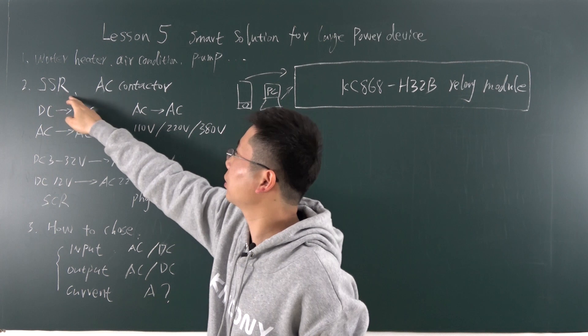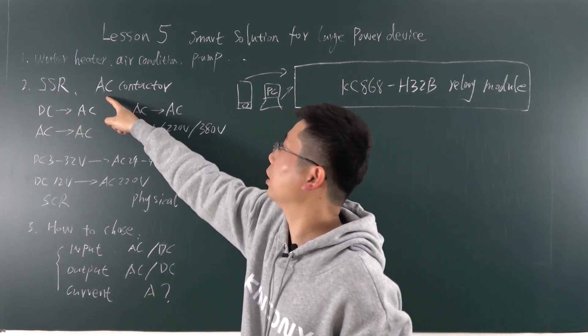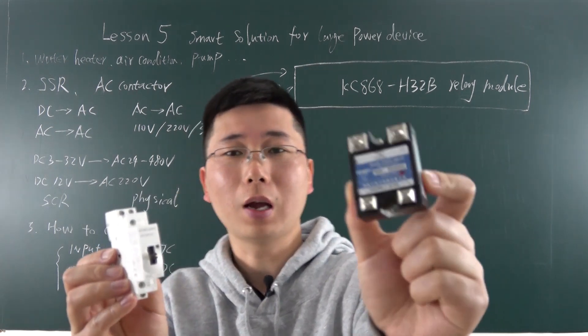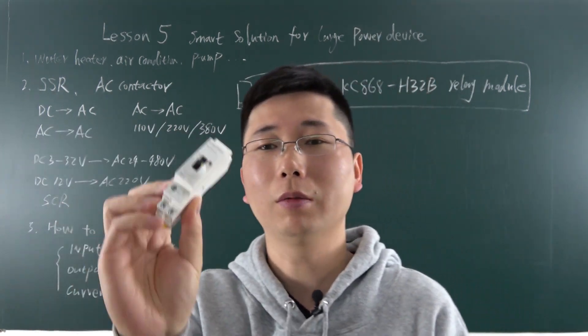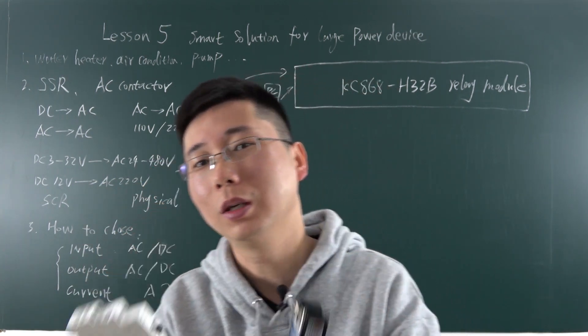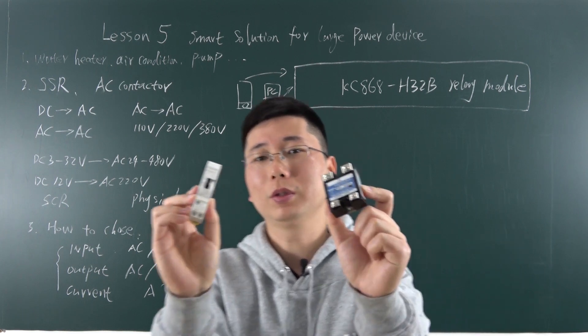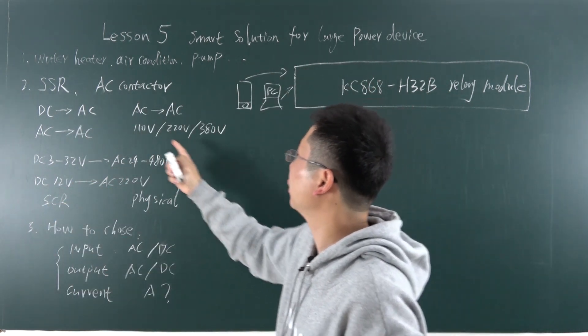That we have used SSR, that is Solid State Relay and the AC contactor. This is SSR, Solid State Relay, and this is AC contactor. We have used this AC contactor to make the power distribution box. So in this video, I will show you the principle of these two parts and how to extend the power.